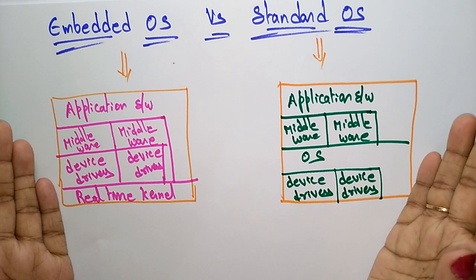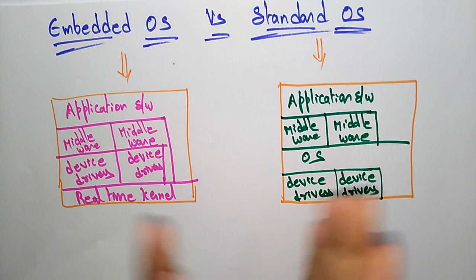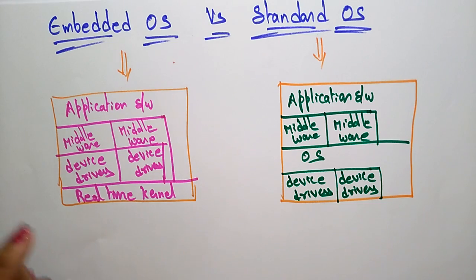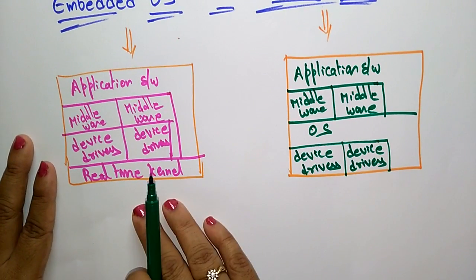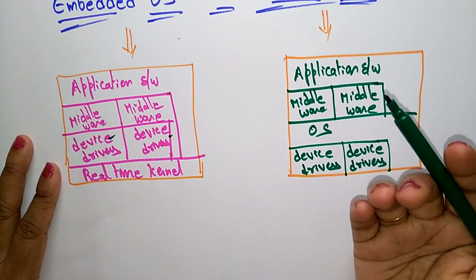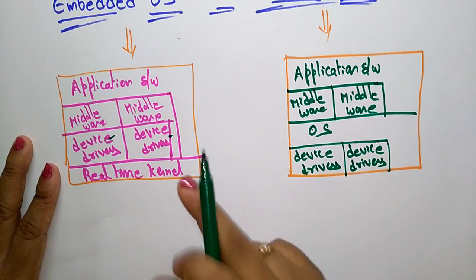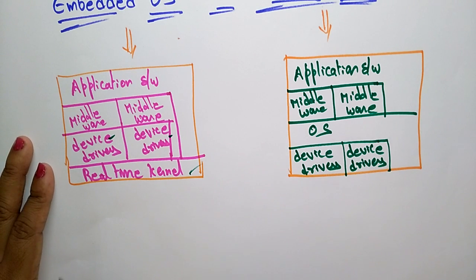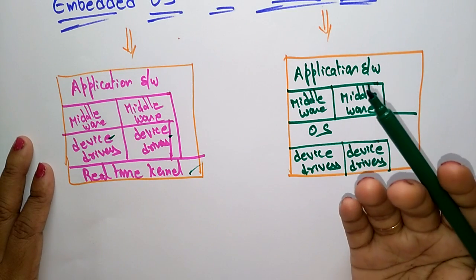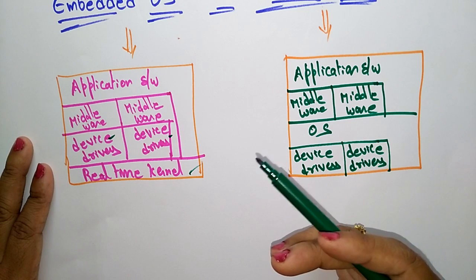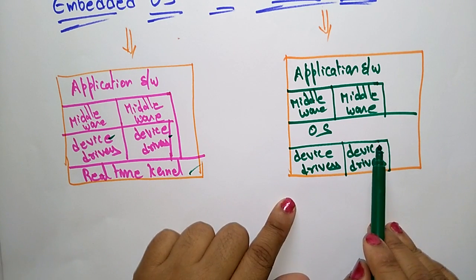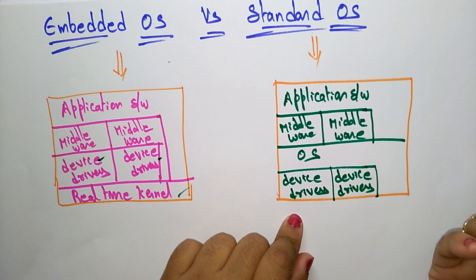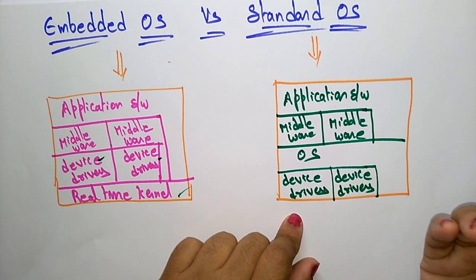The only difference between embedded and standard operating systems is that the embedded operating system uses a real-time kernel, while the standard does not require one. In an embedded operating system, device drivers may be chosen depending on the device you would like to use, and a real-time kernel is very likely needed to support real-time tasks. In a standard operating system, a real-time kernel is not necessary — you can include one if you want, but it is not required.